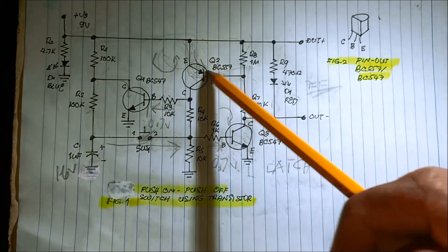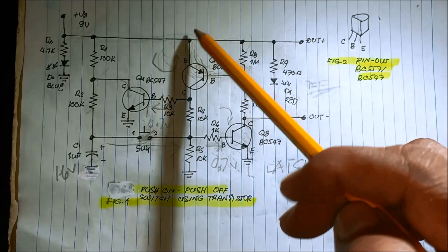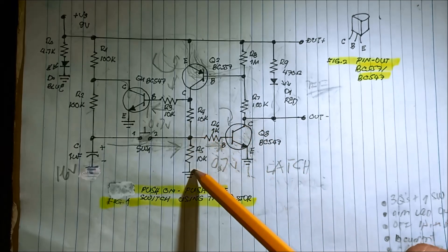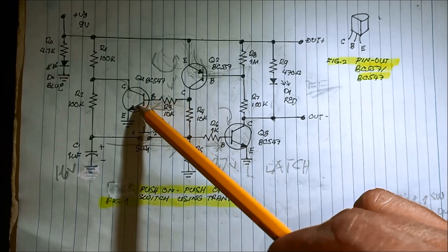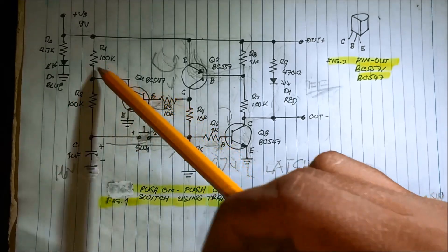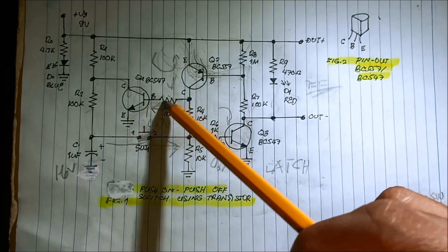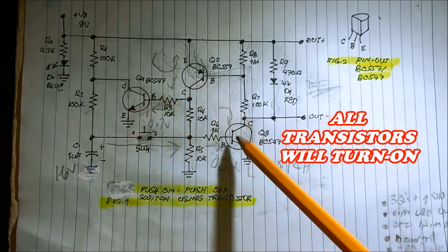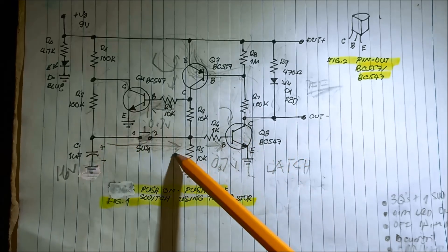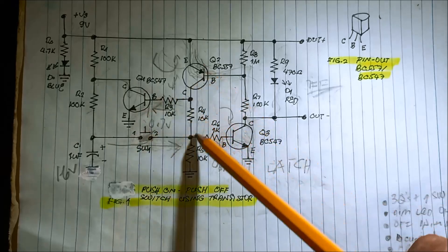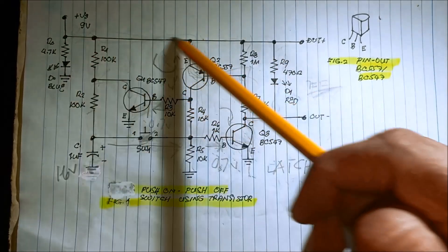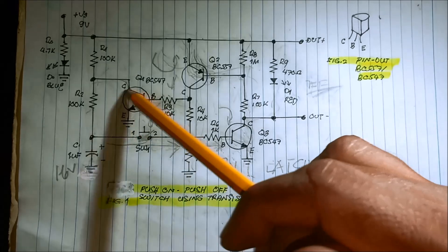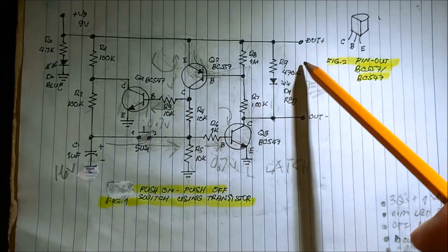This also forward biases the PNP transistor — current flows into the emitter, through the collector, then through 10k to the base, and also through 10k. This now switches on the third transistor, so current flows from collector to emitter to ground on all transistors. The capacitor injects a large amount of current to the base, and current from the supply also turns these transistors on — all acting as closed switches.